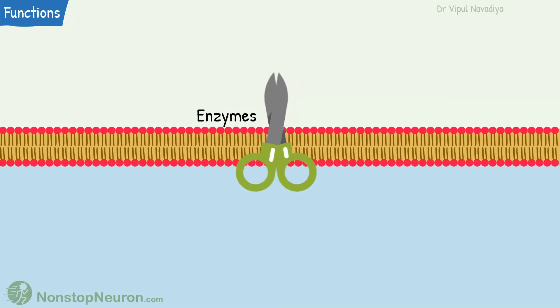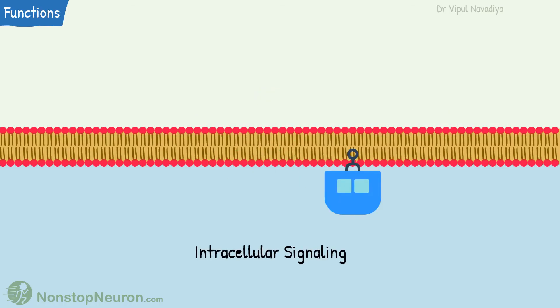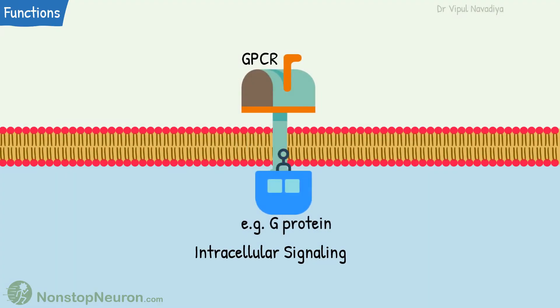Fourth, membrane proteins can function as enzymes. For example, various enzymes on the luminal side of intestinal cells break down small polysaccharides into single sugars and small polypeptides into single amino acids. Finally, their contribution to intracellular signaling — for example, G-proteins, which associate with G protein-coupled receptors and participate in signal transduction.